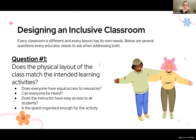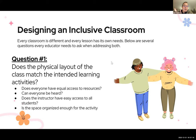One of the first things we can do to address inclusion is the design of our classrooms. Every classroom is different, every lesson has its own needs. Below are several questions every educator needs to ask when addressing both the lesson's needs and the students' needs: Does the physical layout of the class match the intended learning activities? Does everyone have equal access to the resources? Can everyone be heard? Does the instructor have access to all the students? Can we interact with all the students in the same way? Is the space organized enough for this activity?